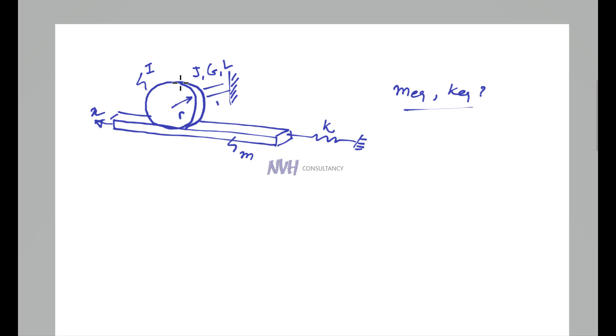We are going to use the energy method for this. The angular displacement is given by theta. The relationship between X and theta without slipping is X equals to R theta, so theta equals X divided by R.